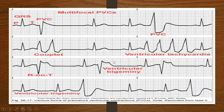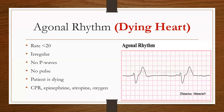Next we're going to talk about the agonal rhythm. Your agonal rhythm is your dying heart. The heart rate is usually less than 20, the rhythm is irregular, there are no P waves, there's no pulse, and this patient is actually dying. The treatment for a patient with the agonal rhythm will be to begin CPR, administer epinephrine, atropine, and oxygen.